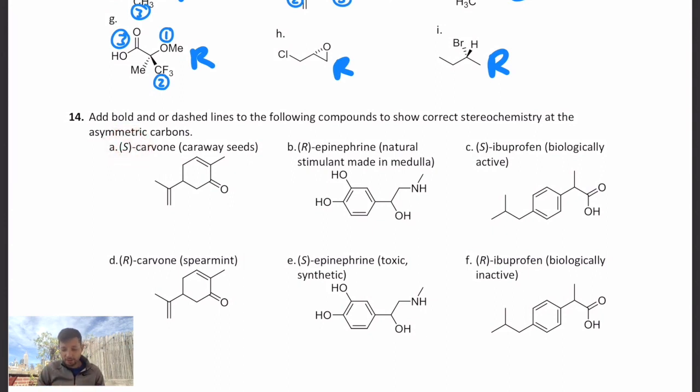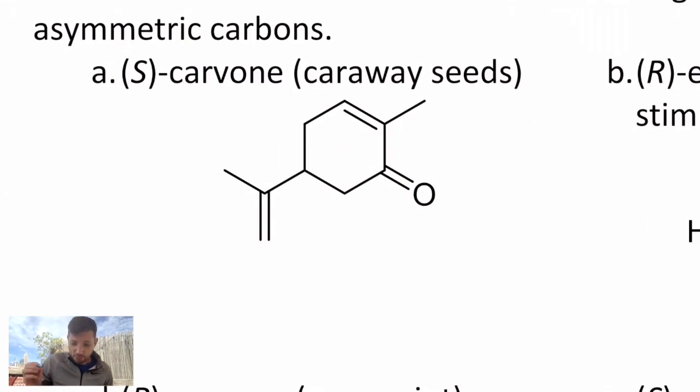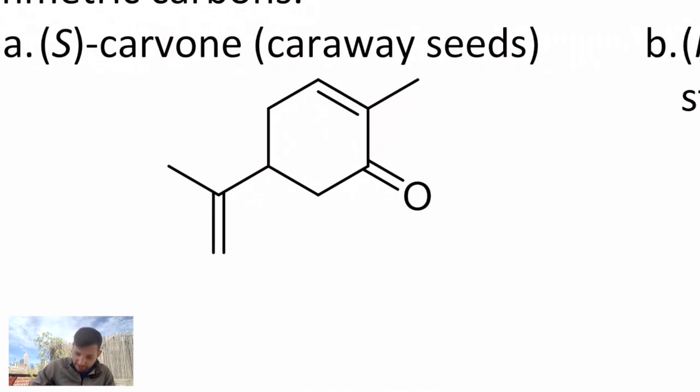Here's the carvone molecule we looked at a few lessons ago and they want me to modify this to make it an S enantiomer. Well first I got to find out where the asymmetric carbon is. It's right there because there's an H, an isopropenyl, a secondary carbon attached to a ketone, and a secondary carbon attached to an alkene. I want it to be S. Well the hydrogen is lowest in priority. That's four. So I'm just going to worry about the other three. I'll label them and then we'll fill in the hydrogen as a result.